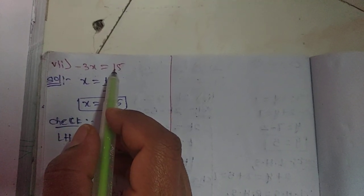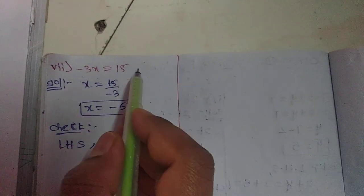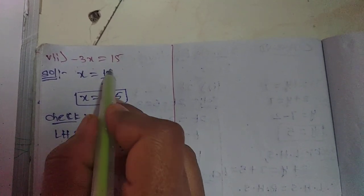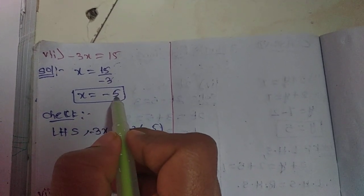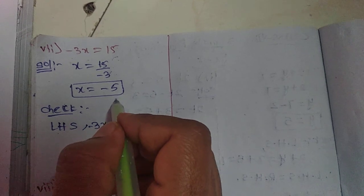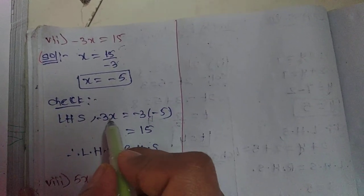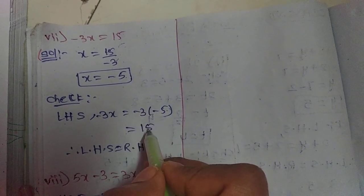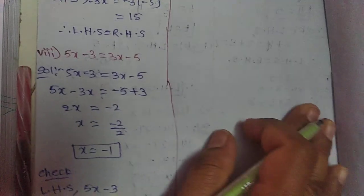Seventh one: minus 3x equals 15. We want only the X value, so transpose minus 3 to the right side as division. X equals 15 by minus 3. 3 fives are 15, so X equals minus 5. Checking: minus 3 into minus 5. Minus into minus is plus, so 3 fives are 15. LHS equals RHS.